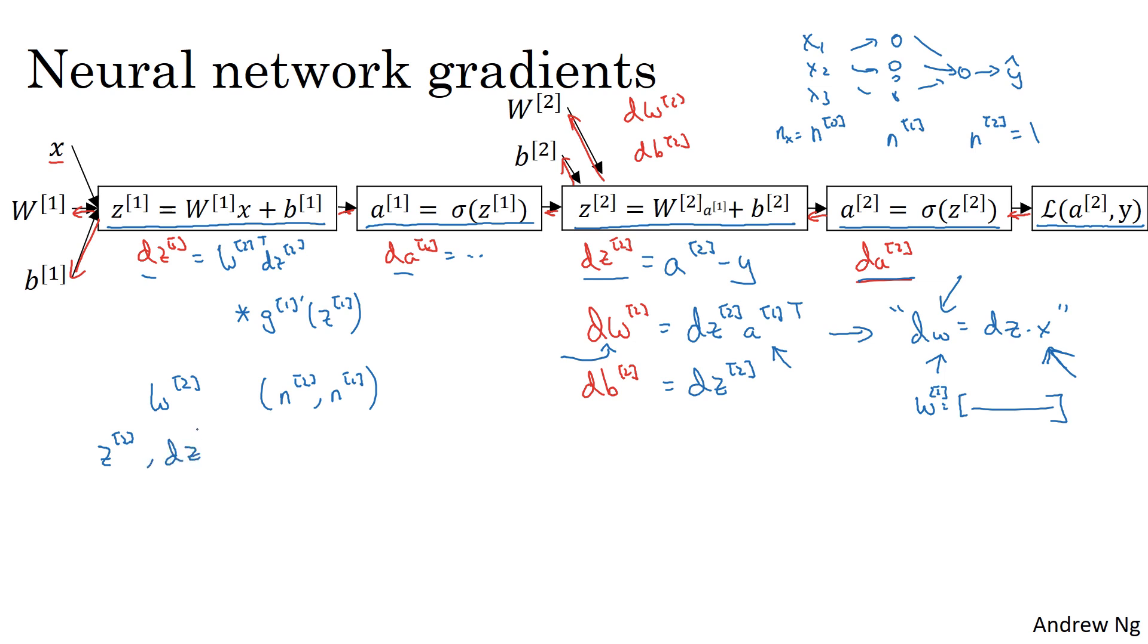Z2 and therefore dz2 are going to be n2 by one dimensional. Note that for any variable foo, foo and dfoo always have the same dimension. So that's why w and dw always have the same dimension, and similarly for b and db and z and dz and so on. So to make sure that the dimensions of this all match up, we have that dz1 is equal to w2 transpose times dz2, and then this is an element-wise product times g1 prime of z1.